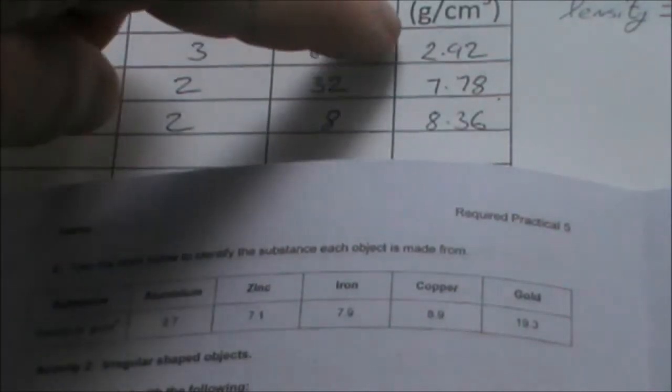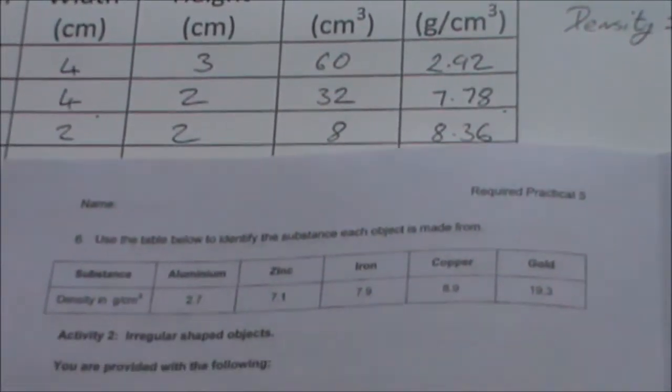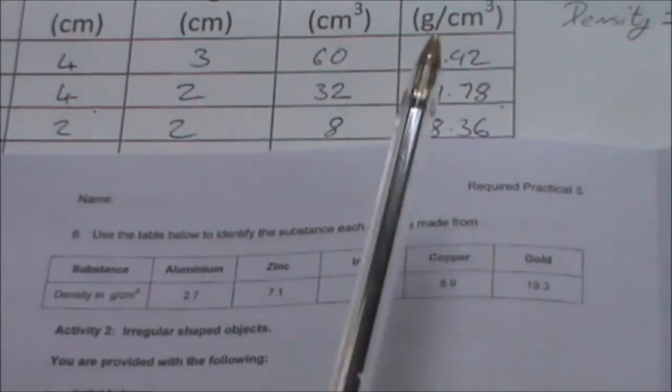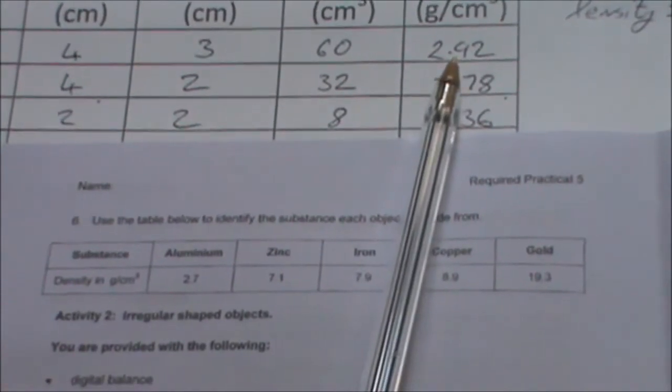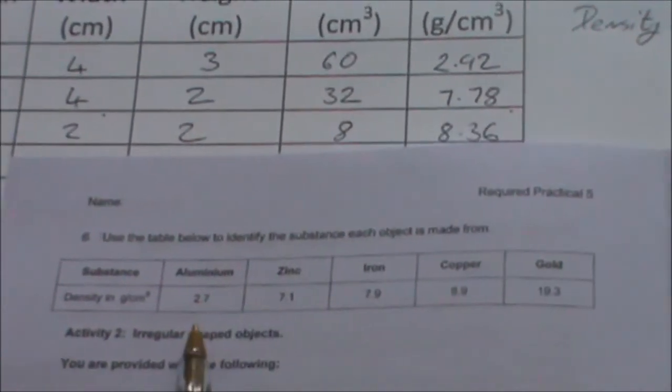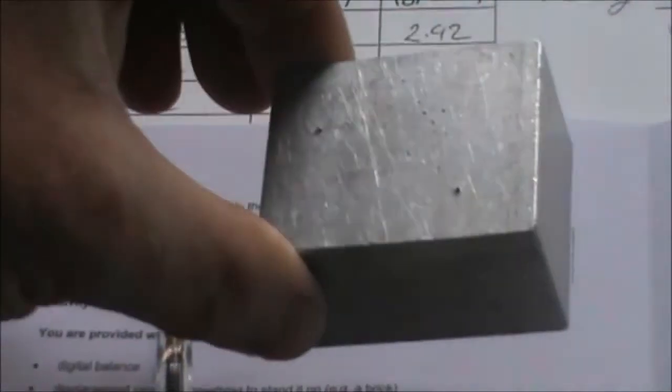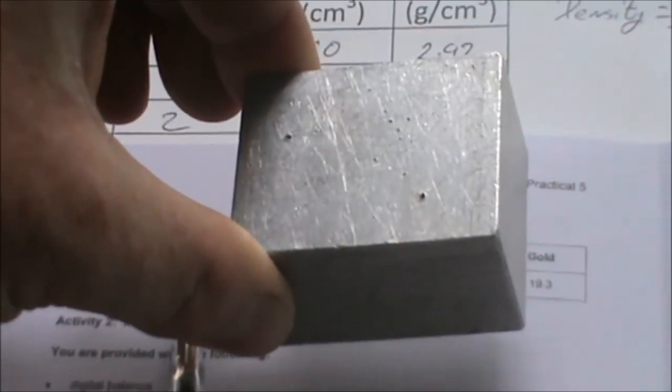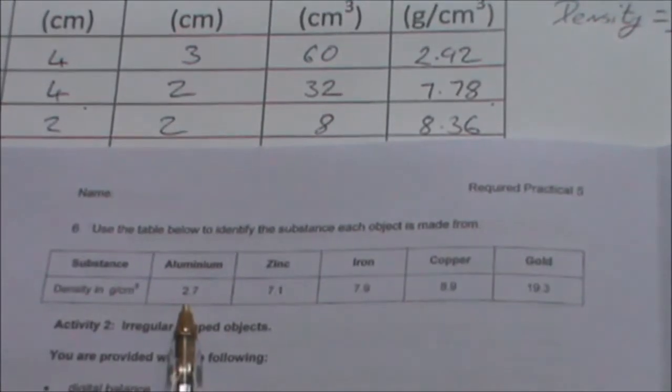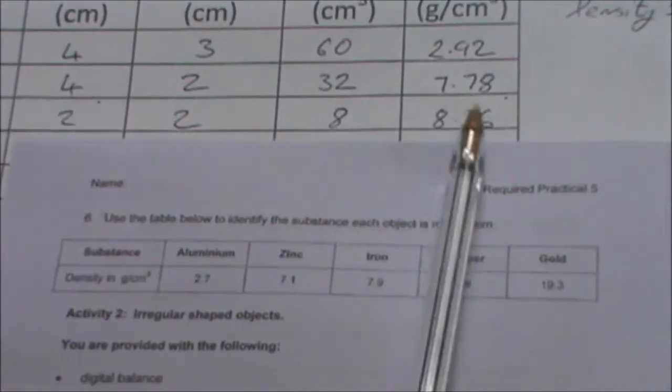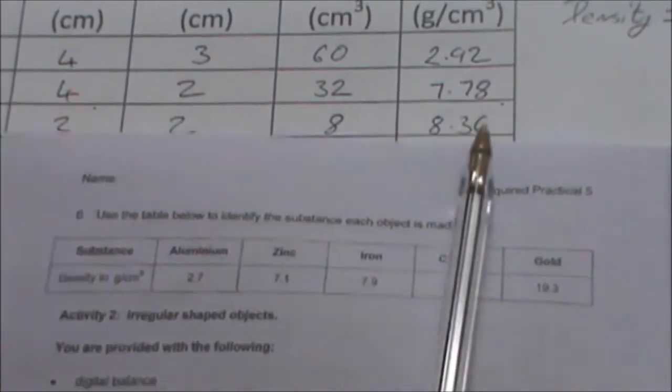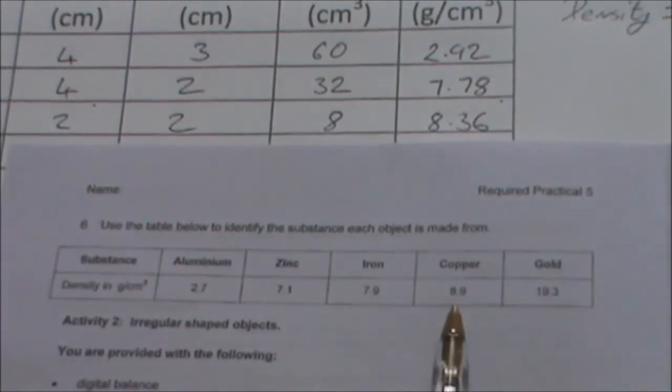Once we have calculated our densities, we can then compare the densities that we have calculated with the densities in the instruction sheet. We can see that our first object, density of 2.92, is very close to the density of aluminium. That is confirmed because this block is a block of aluminium. We can then compare our other densities with the results in the required practical worksheet.